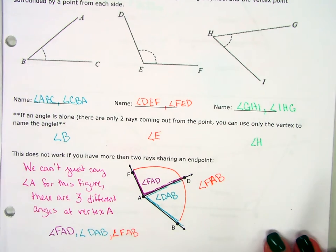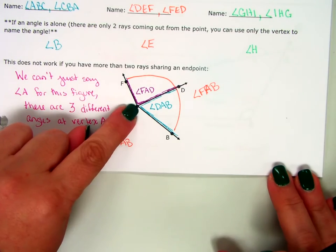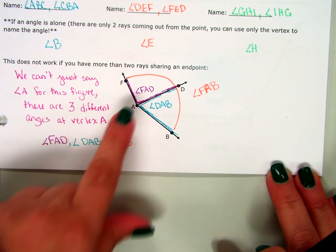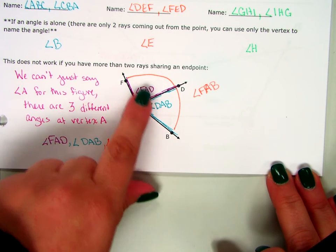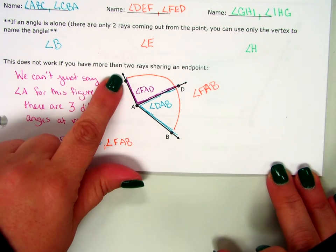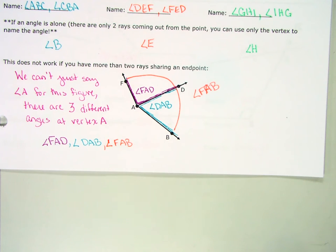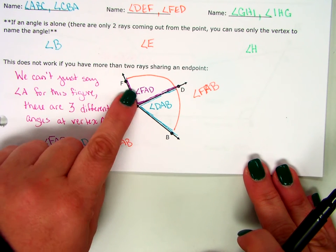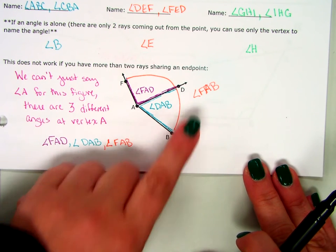But a lot of the times we're going to have more than two rays coming out of the same vertex. I've got three rays here, which means I have three different angles. I've got FAD on top, I have DAB on the bottom, and then I have the fabulous angle FAB as the whole thing together. So if you follow the FAD, the FAD of dabbing, you're fabulous.